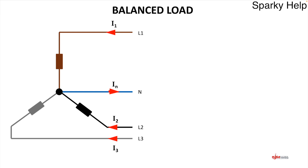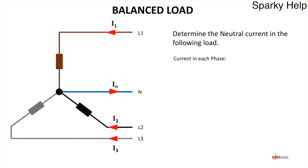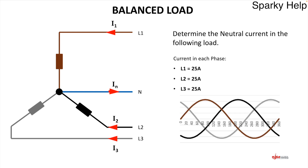First, we'll look at a balanced load — that means the same amount of current in each phase. We'll say 25 amps in L1, L2, and L3. The current waveforms are three identical 25-amp sine waves, all peaking at different points in time — 120 degrees out of phase with each other. If you take a vertical line through any point along these sine waves and add the values at those crossing points, the positive and negative values always sum to zero.